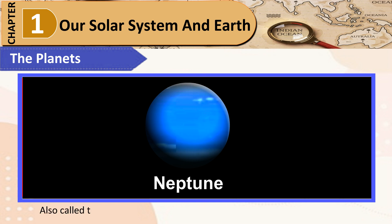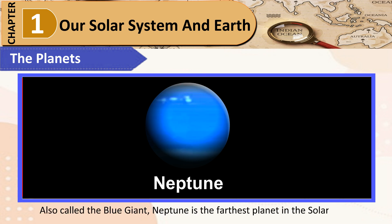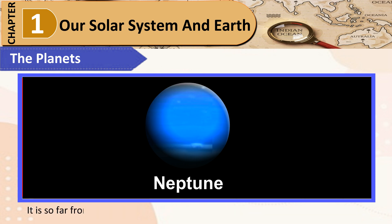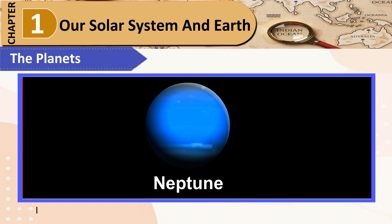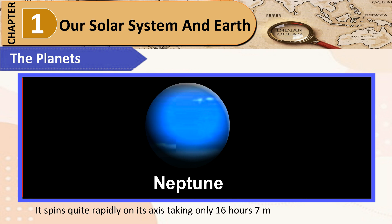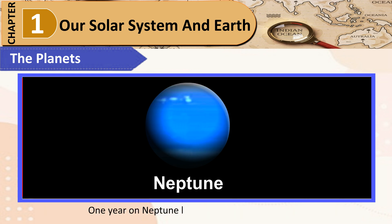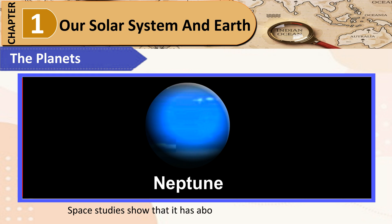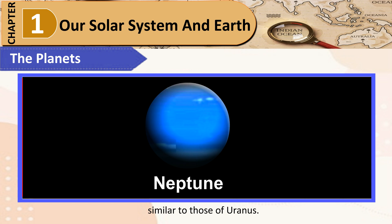Neptune: Also called the Blue Giant, Neptune is the farthest planet in the solar system. It is so far from the Earth that it can hardly be seen even with powerful telescopes. It spins quite rapidly on its axis, taking only 16 hours 7 minutes for one rotation. One year on Neptune lasts for almost 165 Earth years. Space studies show that it has about 13 satellites and thin rings, similar to those of Uranus.